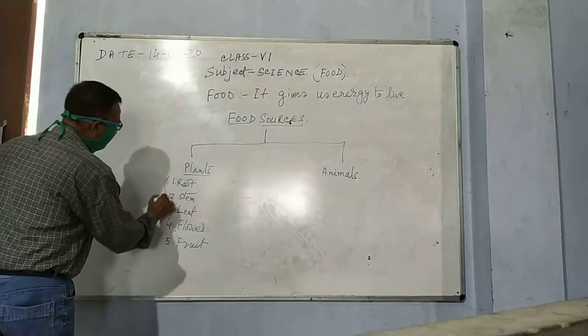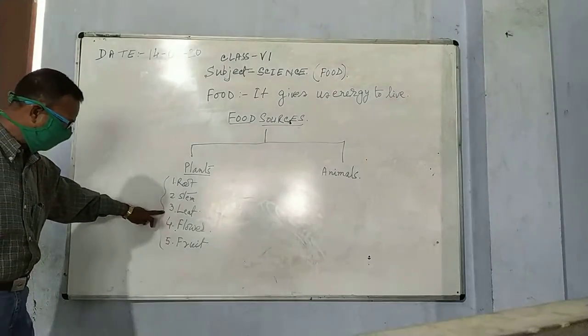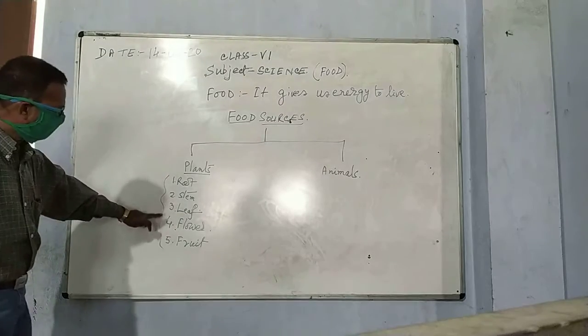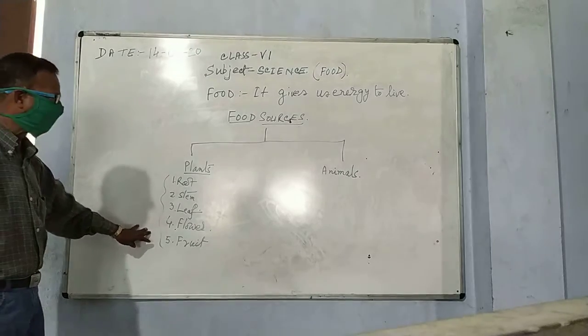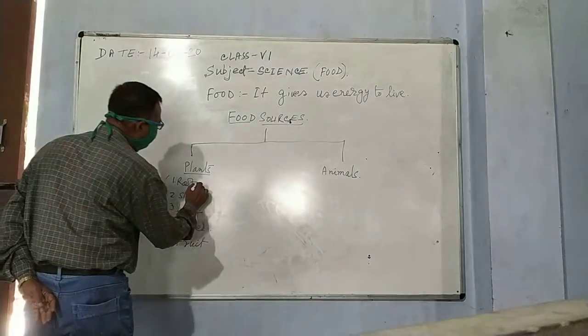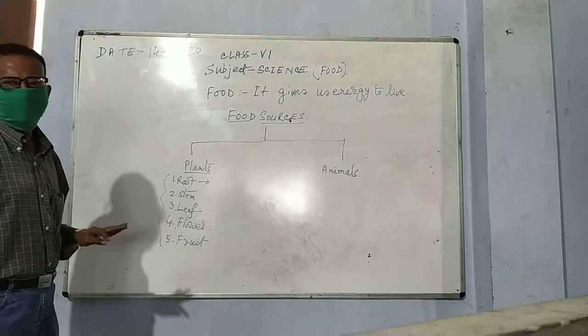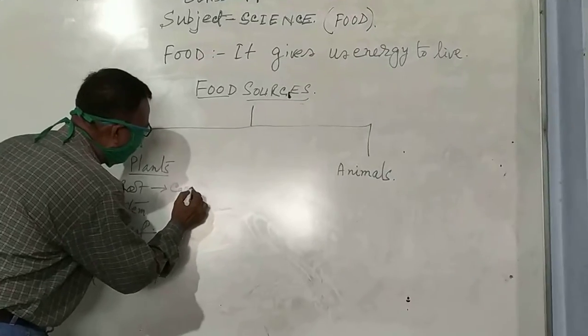These are the parts of a plant. Root, stem, leaf, flower and fruit are the parts of the plant. We take root part of a plant, such as carrot.